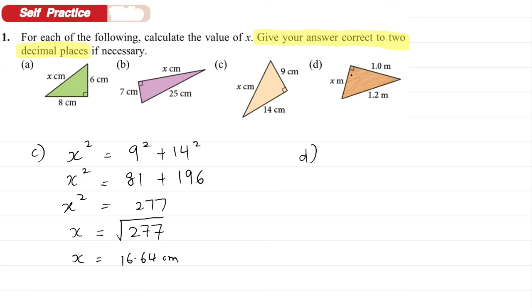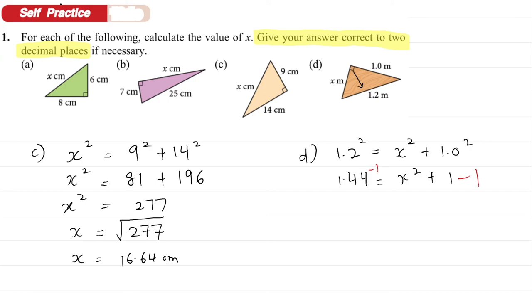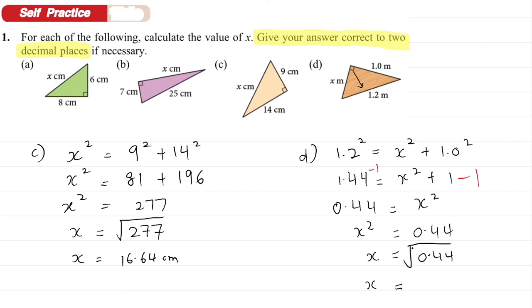For D: the right angle is here, so the hypotenuse is already given. Set up the formula: 1.2 squared equals X squared plus 1.0 squared. So 1.44 equals X squared plus 1. Minus 1 from both sides: 0.44 equals X squared. Therefore X equals √0.44, which gives 0.66 cm to 2 decimal places.